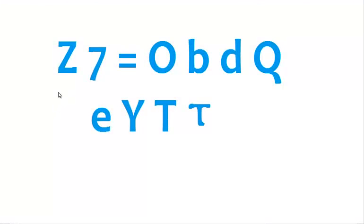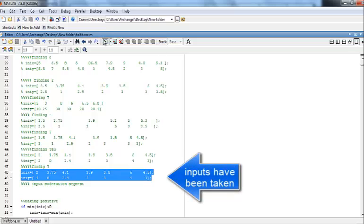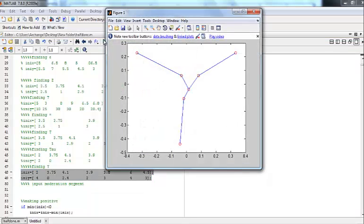The characters are z, 7, equal to, o, b, d, q, e, y, t, and tau. When we run the program, we get y as output like the beginning.